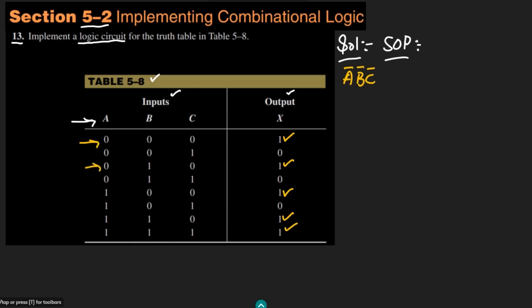The second term has A=0, B=1, C=0, so it gives A complement B C complement — B is already 1 so it is not complemented, while A and C are complemented. The third term is 1 0 0, so A is uncomplemented while B and C are complemented, giving A B complement C complement. The second-to-last term is 1 1 0, giving A B C complement, and the last term is 1 1 1, giving A B C.